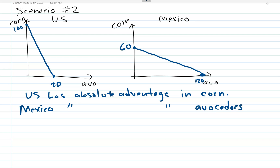This advantage — and this is not a real example, just made up to illustrate the point — could partially be based on geographical conditions: the soil and climate in the US is better for corn, and the soil and climate in Mexico is better for avocados. It could also relate to technology, skill, or the presence of certain companies that know how to do one product better than the other.